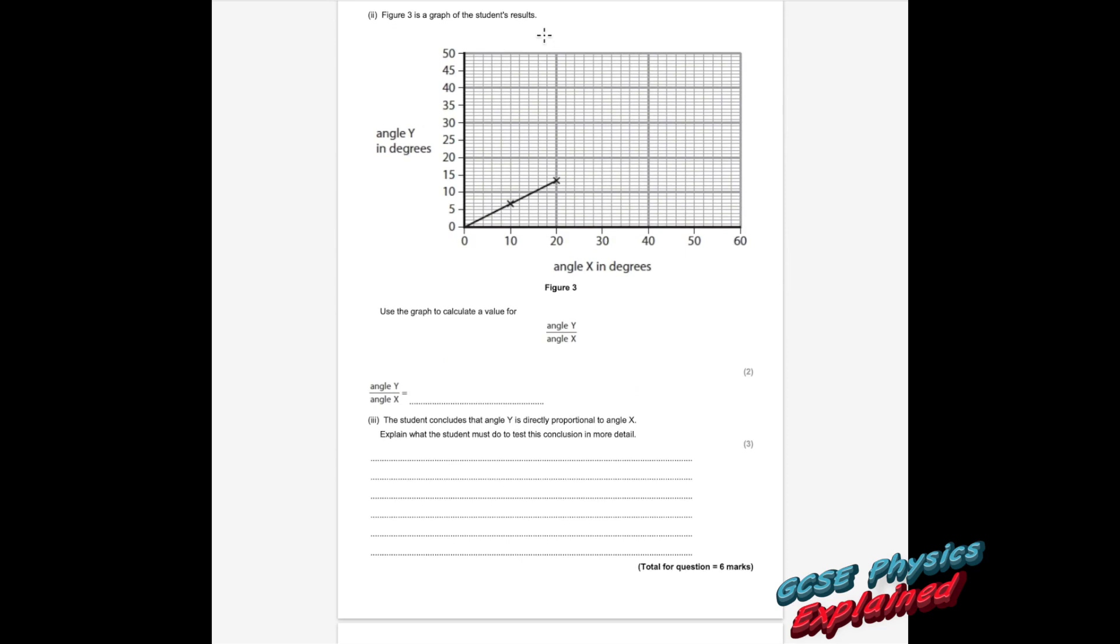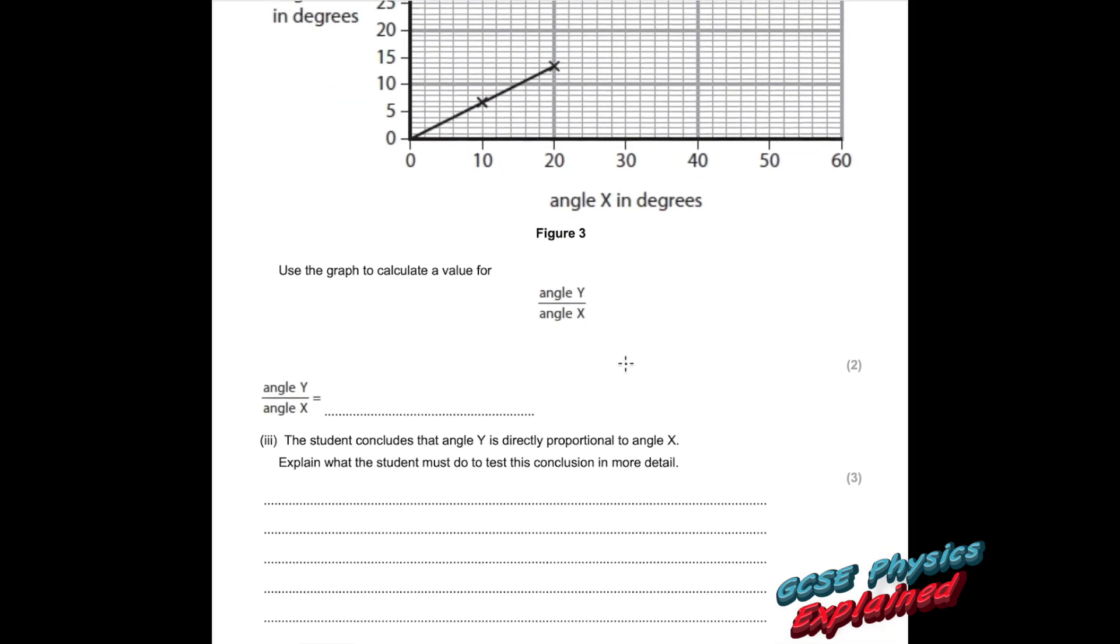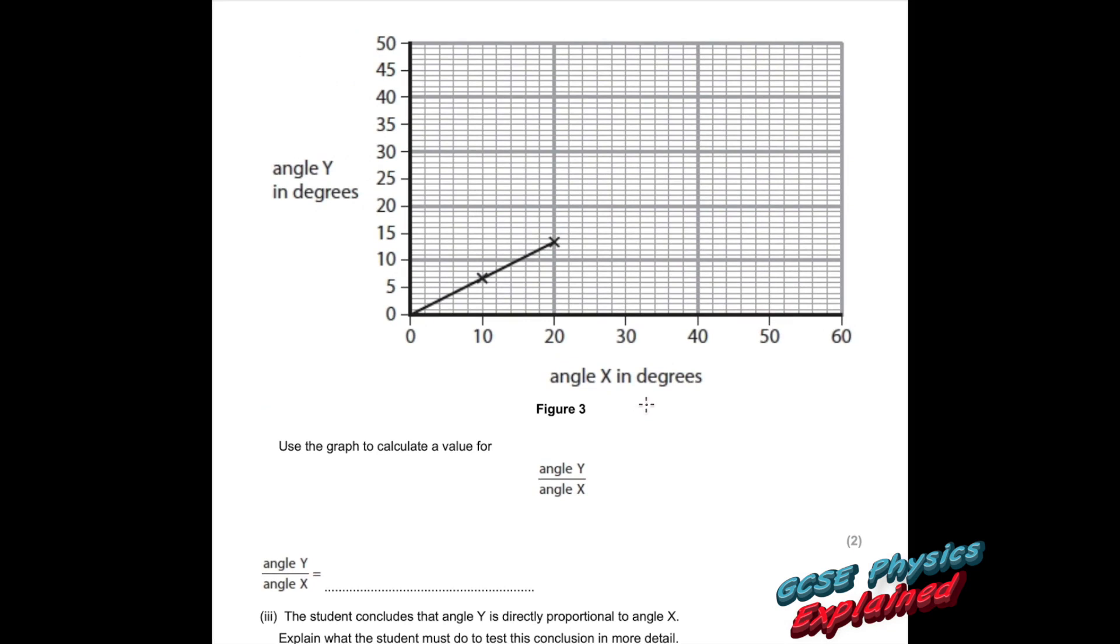Question 1 part 2. Figure 3 is a graph of the student's results, with angle Y up the side and angle X along the bottom, both in degrees. Use the graph to calculate the value for angle Y divided by angle X. You can pick any values from the graph as long as they correspond to each other. So if I say when angle Y is 10, that means angle X is 15. So 10 over 15, and that's 0.6 recurring.